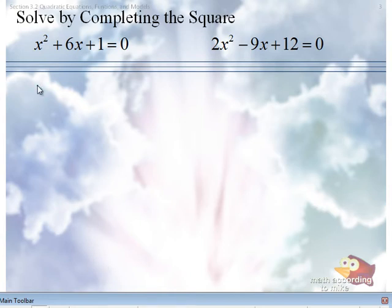Isolate the variables. Variables on one side, numbers on the other. The second thing is actually already done for us. The second thing is make sure the leading coefficient is a 1. Those two steps can be done in either order, but they both must be done before we complete the square.